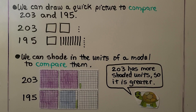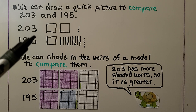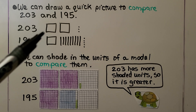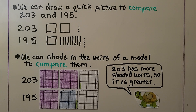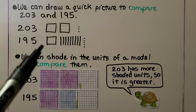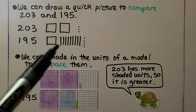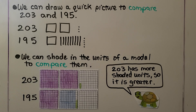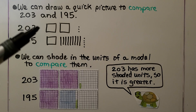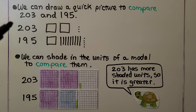We can draw a quick picture to compare 203 and 195. We draw two squares for the 200s and three little dots for the three ones. For 195, we make one square for 100, nine lines for the nine tens, and five dots for the five ones. We can see there are more hundreds in 203, so that's the greater number.